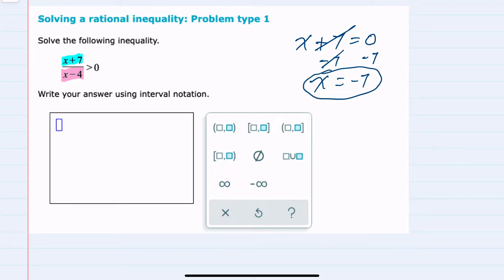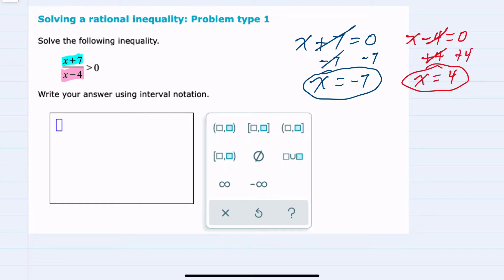And then looking at the denominator, I really don't want the denominator to be 0, but I want to find out where it's 0. To find out where x minus 4 equals 0, here I would add the 4 over to the other side, giving me x equals 4. So I have two points here where the factors on that left-hand side would be equal to 0.